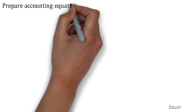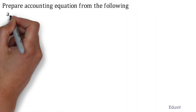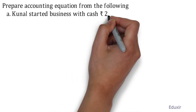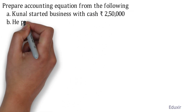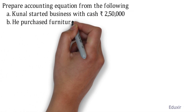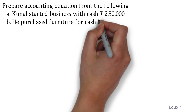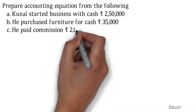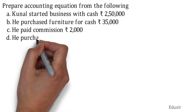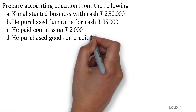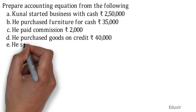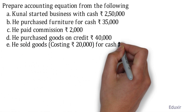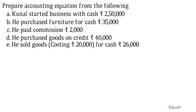Prepare accounting equation from the following: Kunal started business with cash ₹2,50,000. He purchased furniture for cash ₹35,000. He paid commission ₹2,000. He purchased goods on credit ₹40,000. He sold goods costing ₹20,000 for cash ₹26,000.